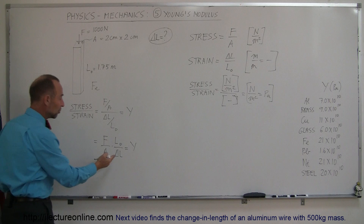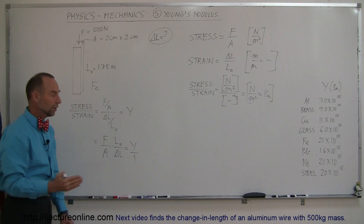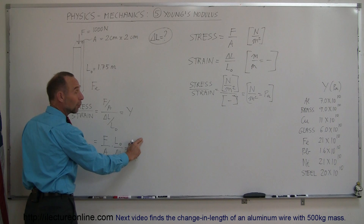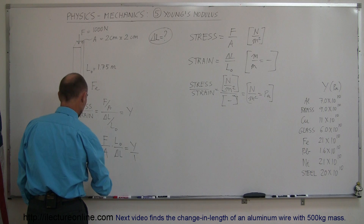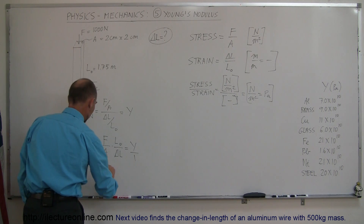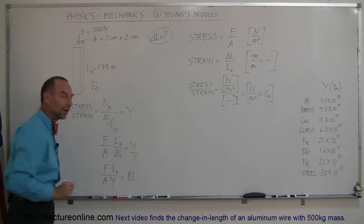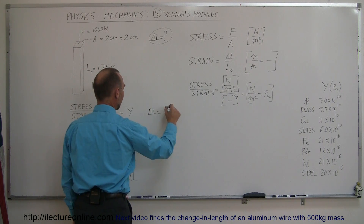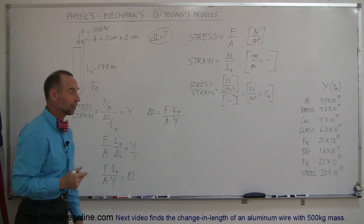To isolate delta L, we move it to the other side. When we have a fraction equal to a fraction, we cross-multiply diagonally: what's in the denominator on the left goes to the numerator on the right, and vice versa. So we can write this as: force times initial length divided by the cross-sectional area times Young's modulus equals delta L. We've now separated out delta L.